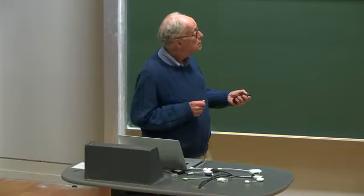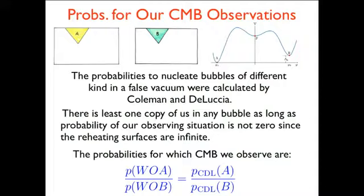And here's the answer. Well, we know how to calculate one bubble. The calculation was done by Coleman and De Luccia. You might worry, where are we? We're supposed to be calculating third-person probabilities. But in the usual story, there are an infinite number of Hubble volumes inside every bubble. And if there's a probability, however small for us to exist in one of the Hubble volumes, the probability will be one in each kind of bubble, that there's a copy of us. So the probabilities for the C and B that we observe are just in this ratio of the Coleman De Luccia probabilities A and B. Problem solved.